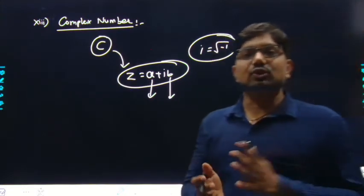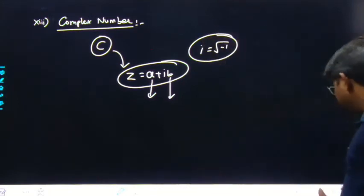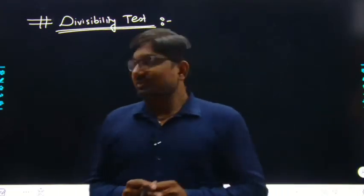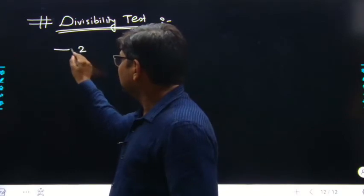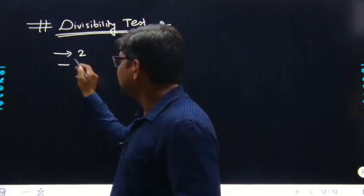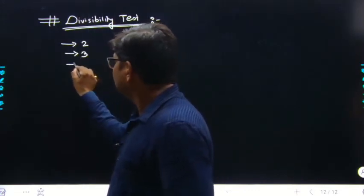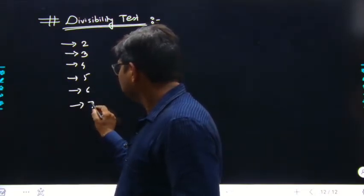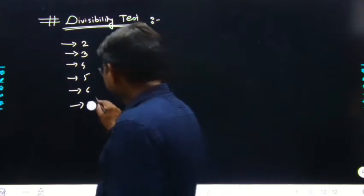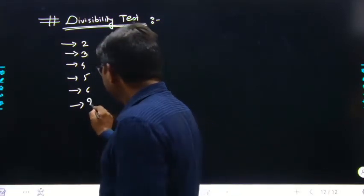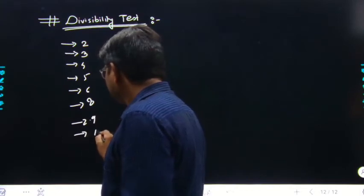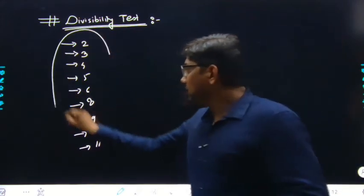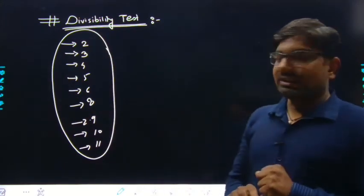तो ये सारे हो गए number system के types। इसके बाद है divisibility test। Divisibility test में देखेंगे कि कोई भी number 2, 3, 4, 5, 6, 8, 9, 10, और 11 से कब divide होता है — इनके rules क्या हैं।